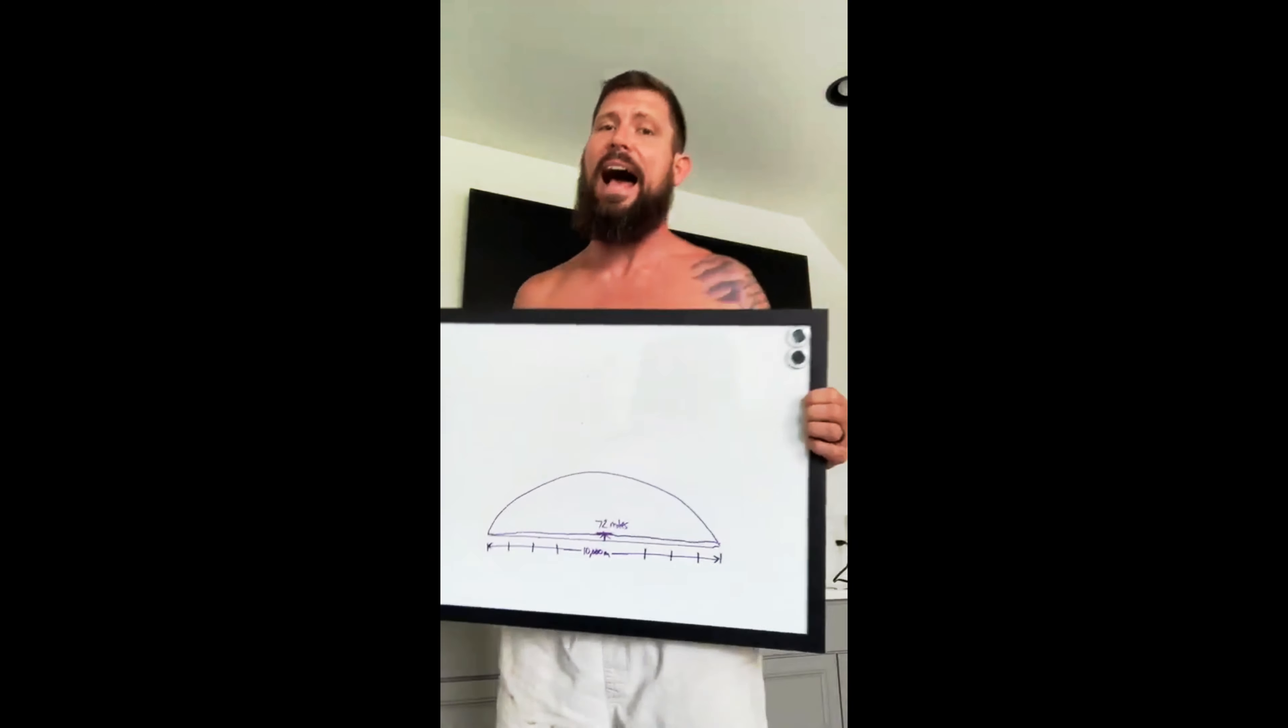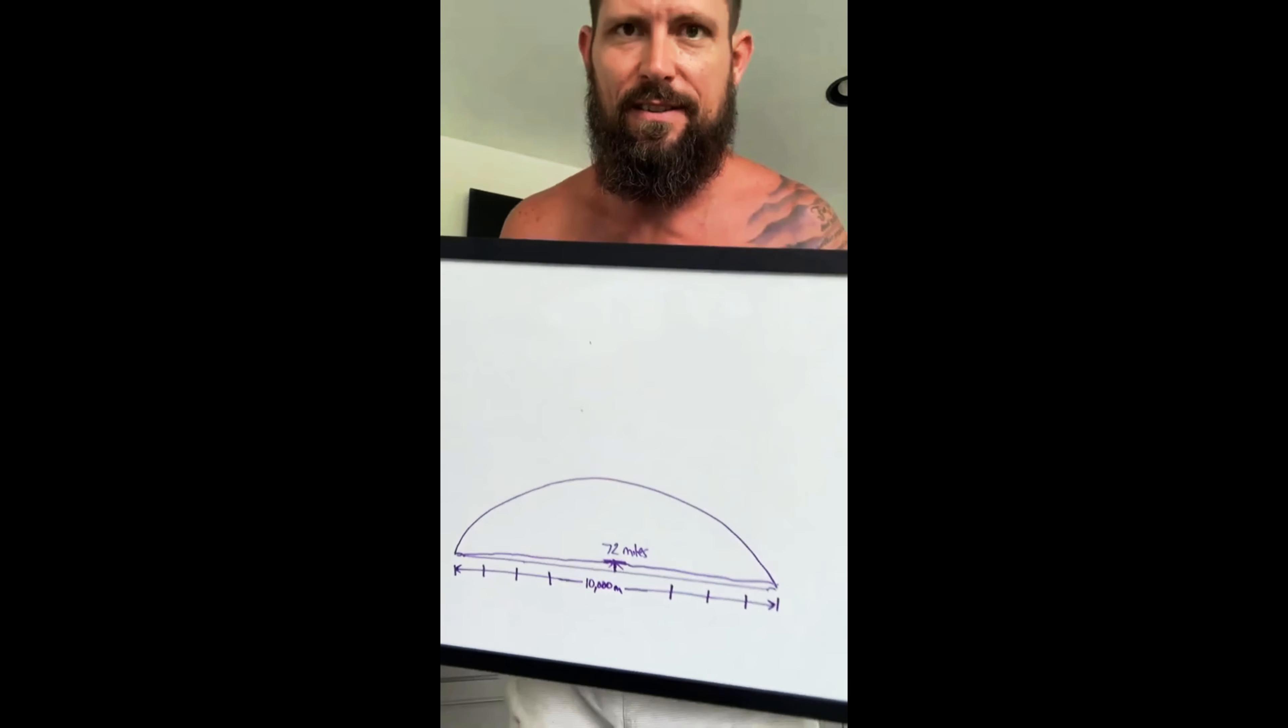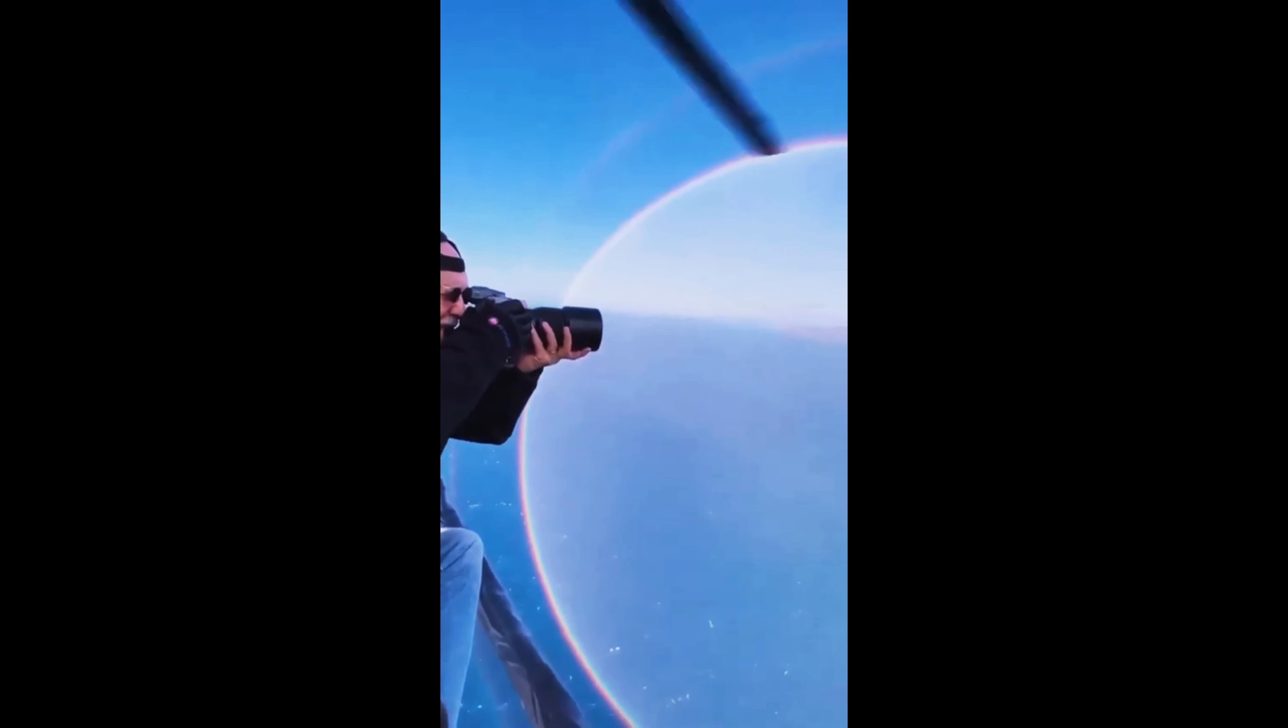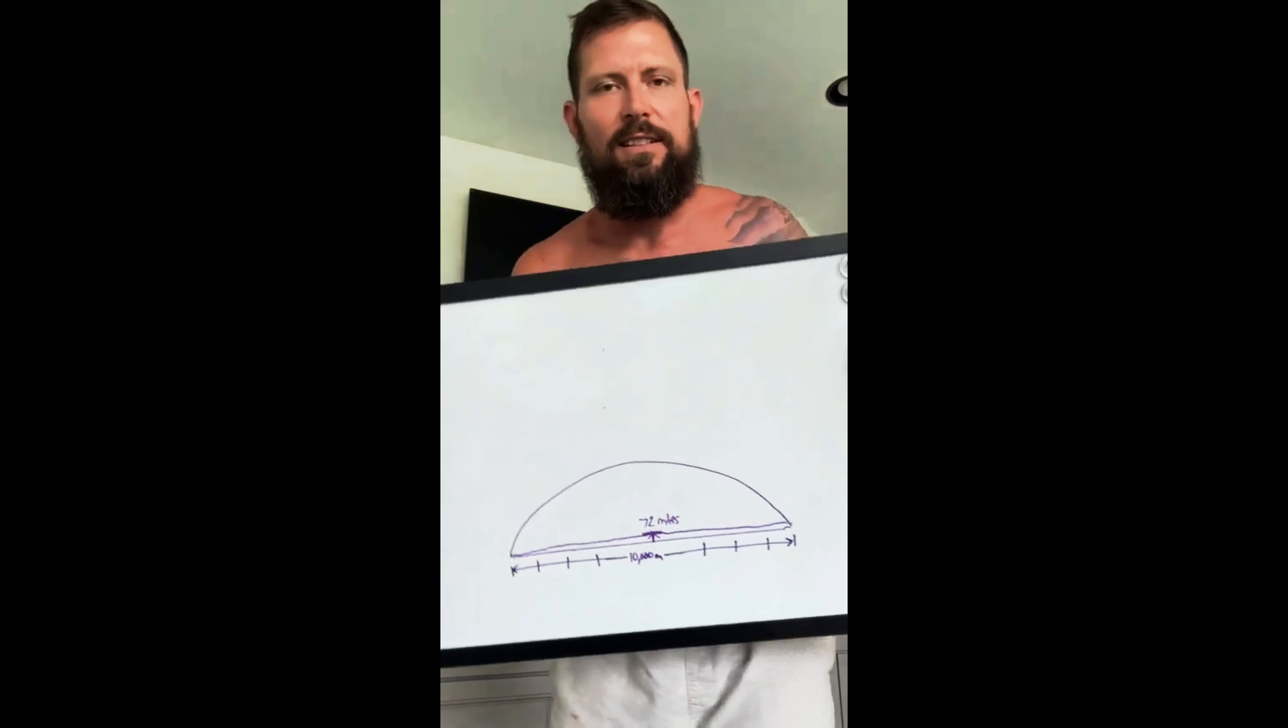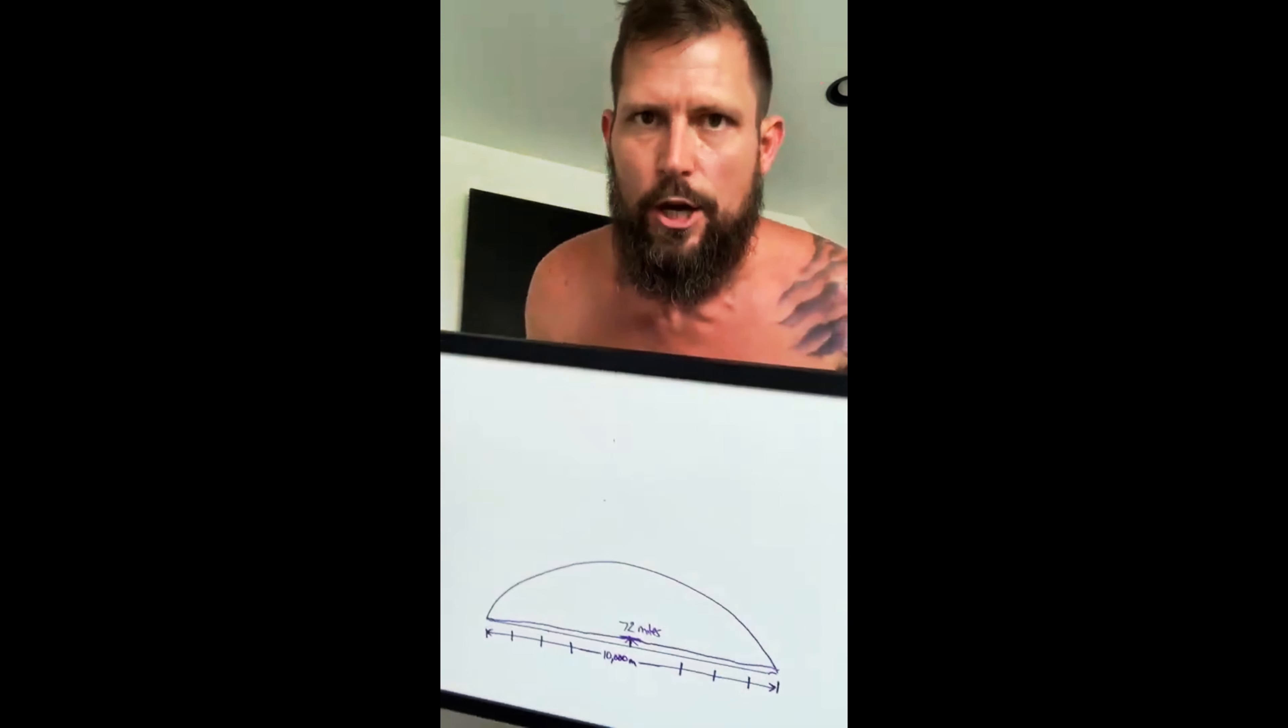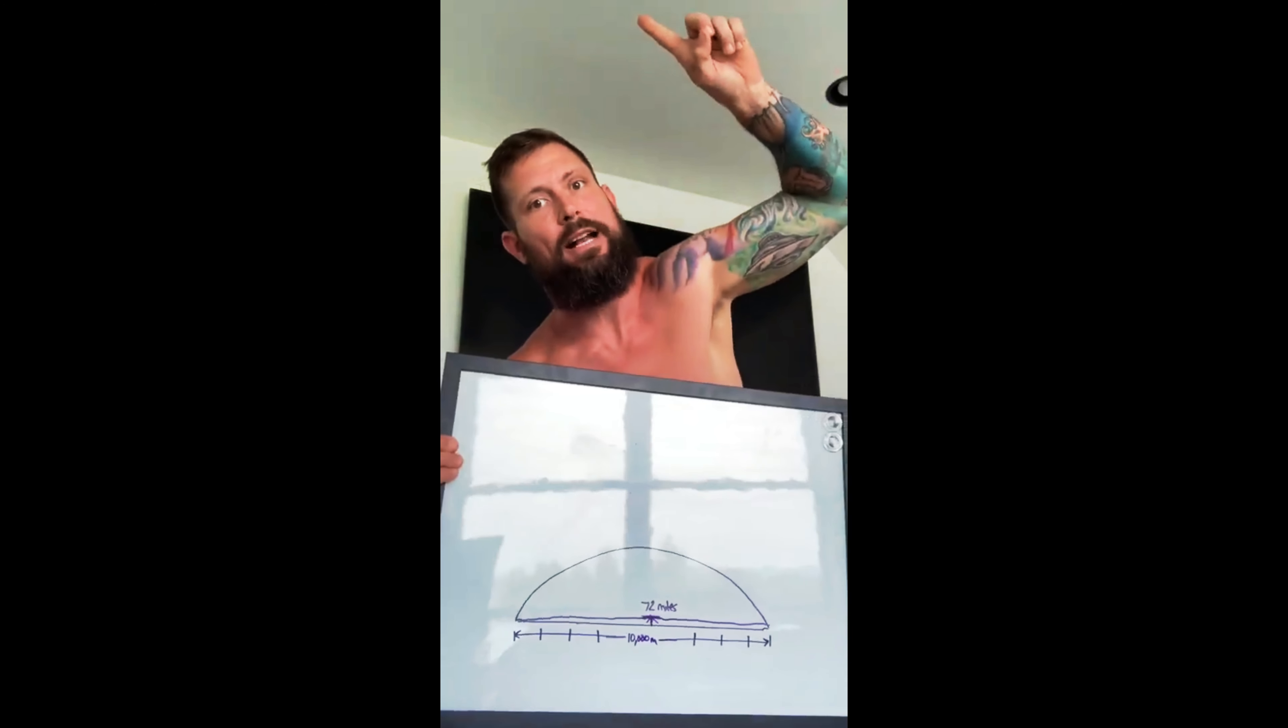Rainbows prove that the sky is curvy. Look at this footage. As you can tell, a rainbow when viewed from the air is a flat circle because it reflects the flat firmament above us.